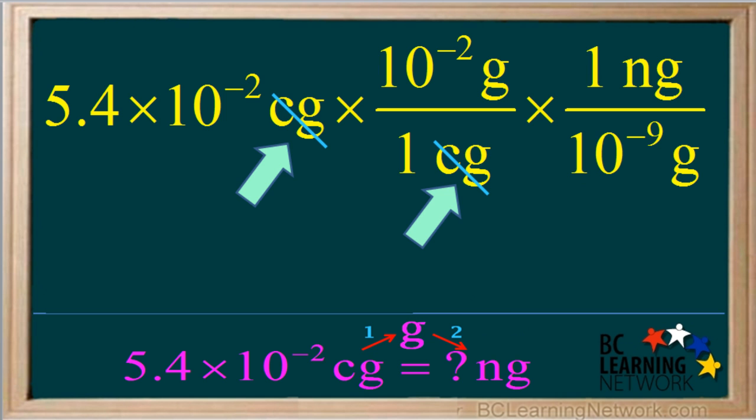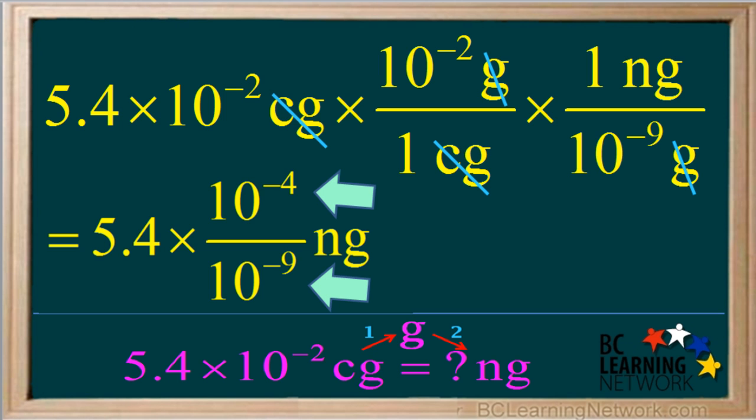We can cancel out the centigrams and the grams. This will leave us with the unit nanograms, which is the one we want. We have 10 to the negative 2 times 10 to the negative 2 on the top. We add the exponents to get 10 to the negative 4. And on the bottom, we have 10 to the negative 9th. So we are left with 5.4 times 10 to the negative 4th over 10 to the negative 9th.